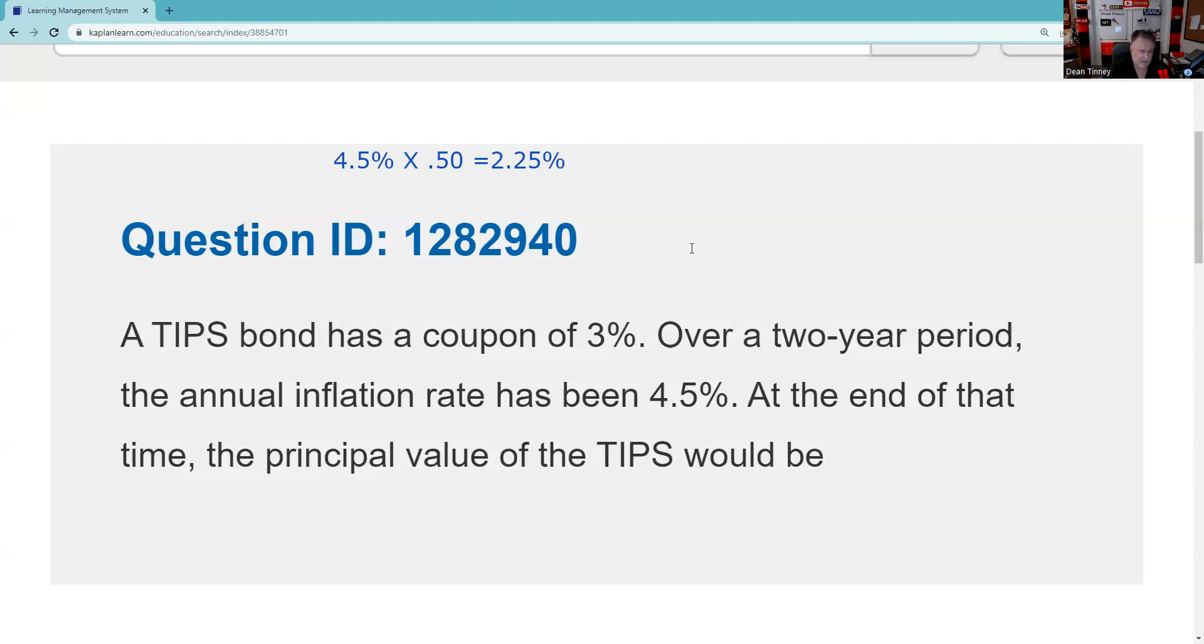And then what I would do is shop my answer set and see if perhaps there isn't an answer available to me that's more than $1,090. If there's two, unlikely, but if there's two that are more than $1,090, then I might have to settle in to do some math. So the way we're going to do the math is we're going to take the principal value, because remember, that's what's going to be adjusted.